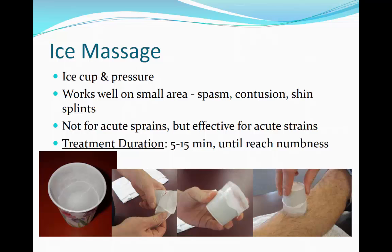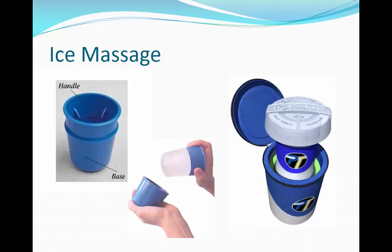Ice massage is not a good treatment for acute sprains, especially ligamentous damage, but can be effective for acute strains such as tendon or muscle damage. Typical treatment duration is between 5 and 15 minutes or until the tissue reaches numbness. Several contraptions have been created for ice cup massage. The picture on the left has a plastic handle that fits into a cup filled with water — when the lower cup is separated, the plastic handle keeps the clinician's hand from being cooled. The picture on the right is another cryo-massage tool where water is frozen in a push-pop type container.